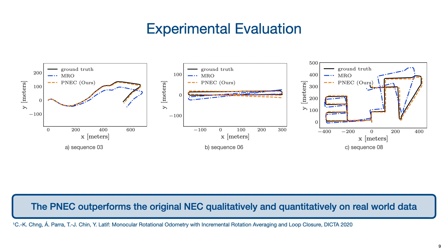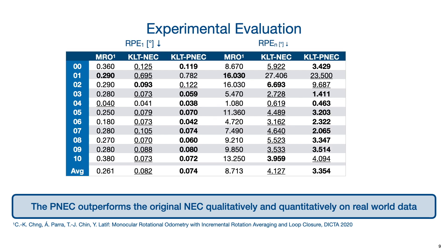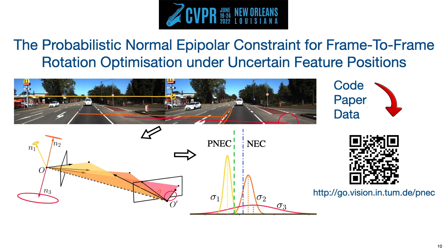The PNEC improves local frame-to-frame relative pose estimation and removes long-term drift, as seen in qualitative trajectories as well as in quantitative metrics. Thank you for your attention. Please visit our project page for the paper with a more detailed explanation and additional experiments.